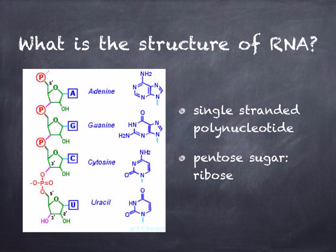Here you can see the phosphodiester link between two nucleotides and how to represent it diagrammatically. RNA is a single-stranded polynucleotide, and the pentose sugar is always ribose. The nitrogenous bases can be adenine, guanine, cytosine, or uracil — you never see thymine in RNA.